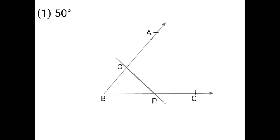Now you have to keep your rounder on point B. From point B to point C, you have to take more than half on ray BC. From point B and point C which is there here on ray BC, take more than half on your rounder. Then first you have to keep your rounder on point B and then you have to cut the arc after taking more than half on ray BC.